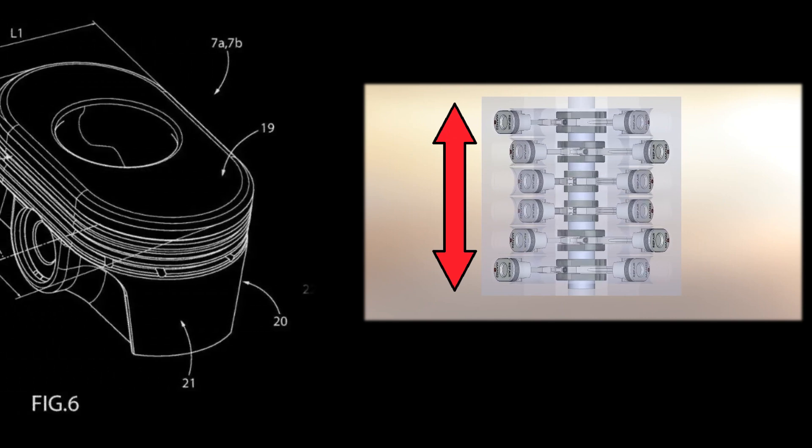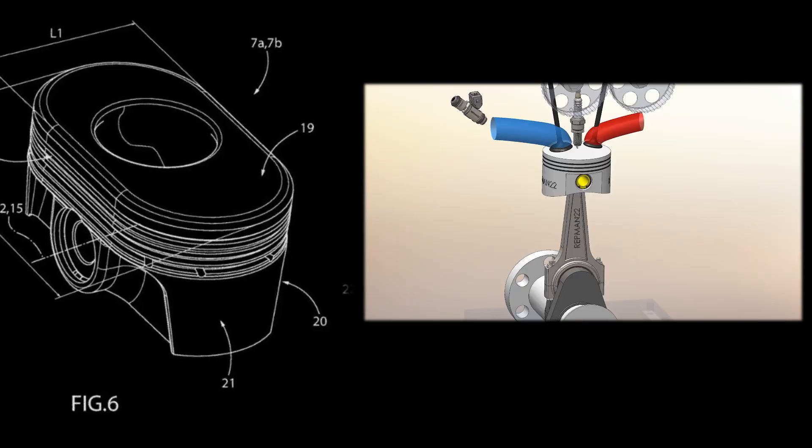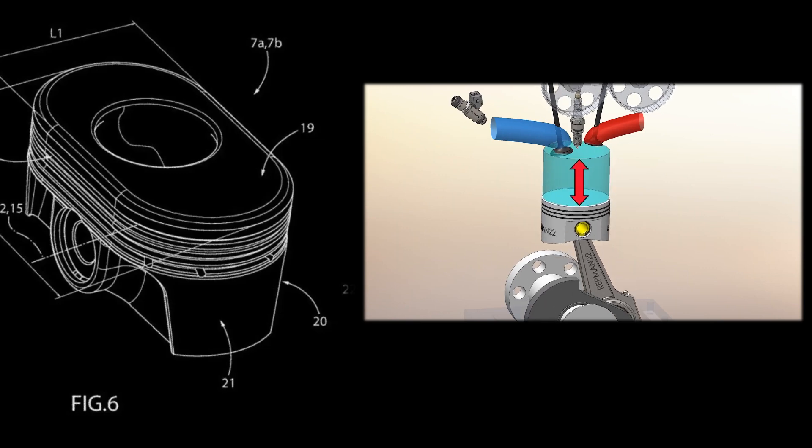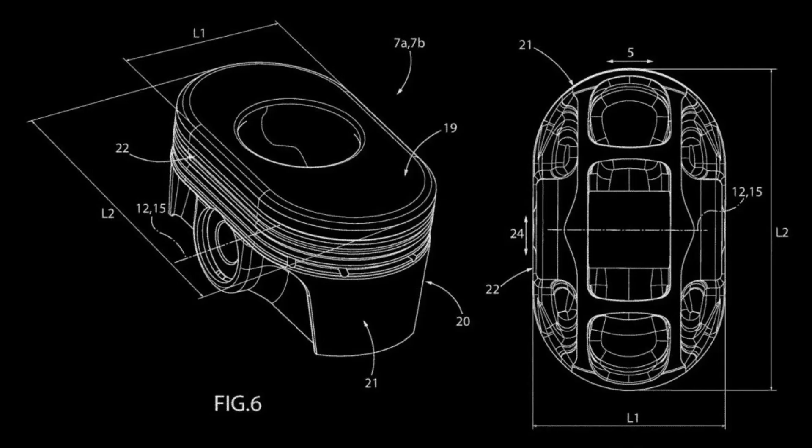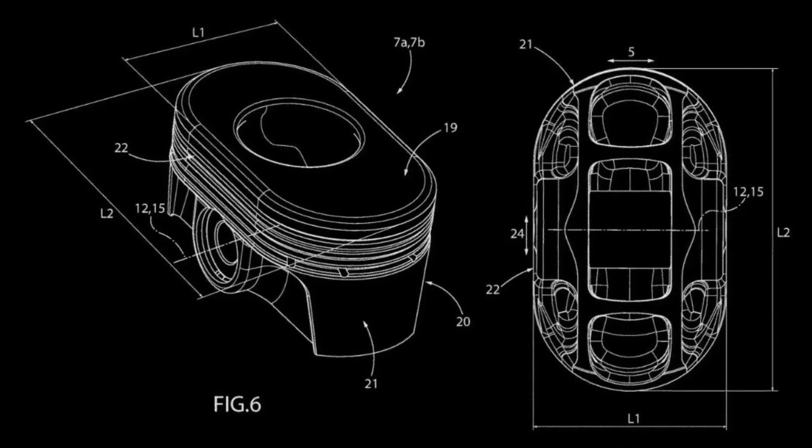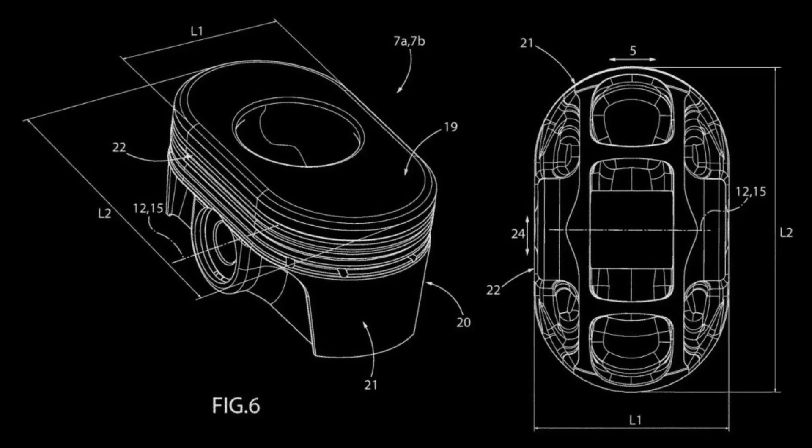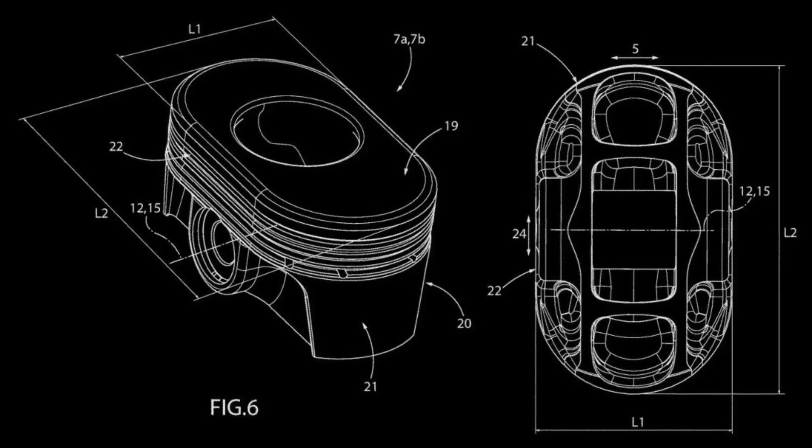But the oval shape doesn't just make the engine shorter. It also offers another advantage. Since the piston's tilt is now along the narrower part of the oval, unlike Honda's design, it results in less overall friction. In theory, this means the engine will have a slightly higher efficiency, higher RPMs, and potentially more power.